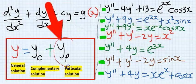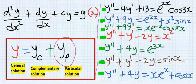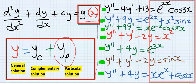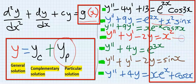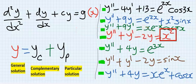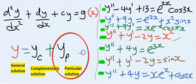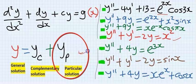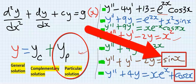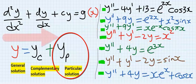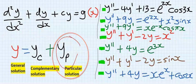Then we obtain a particular solution, which is y subscript p, which is dependent on the right-hand side — the function after the equal sign. If the right-hand side contains a polynomial, an exponential, or a trigonometric function, the particular solution will change accordingly. Let's look at different forms of the particular solution.